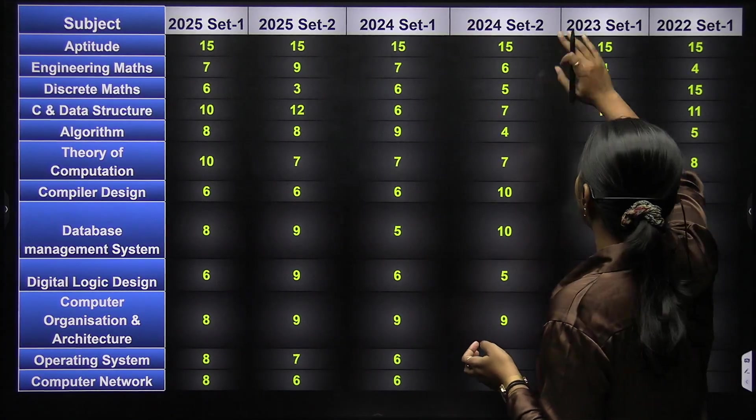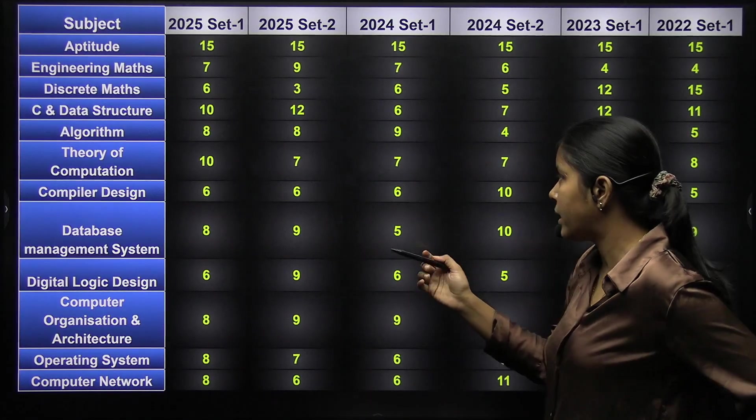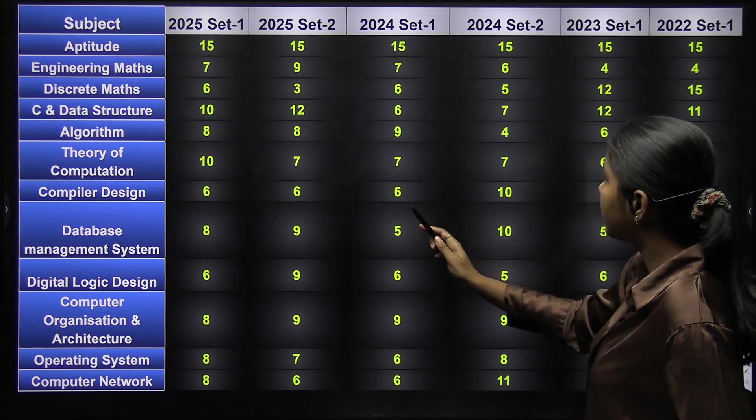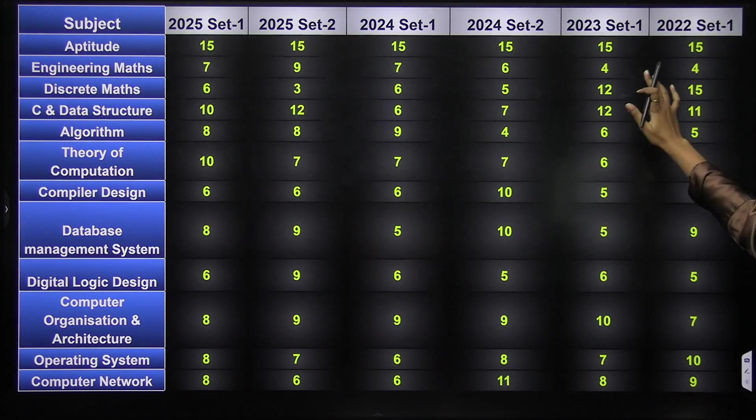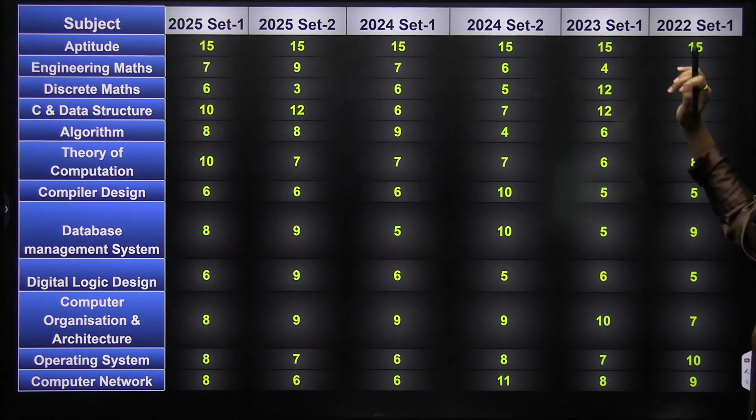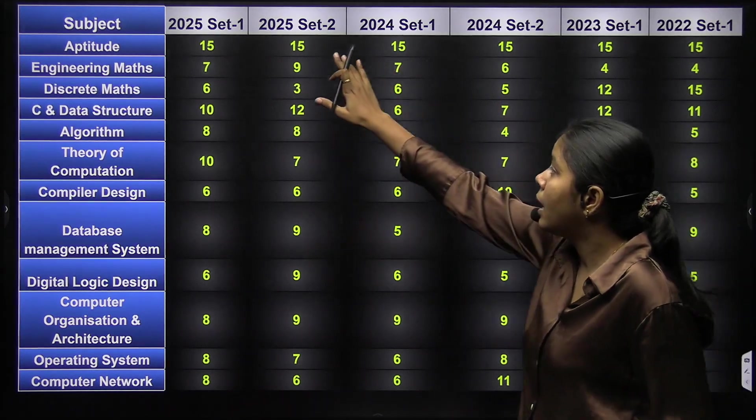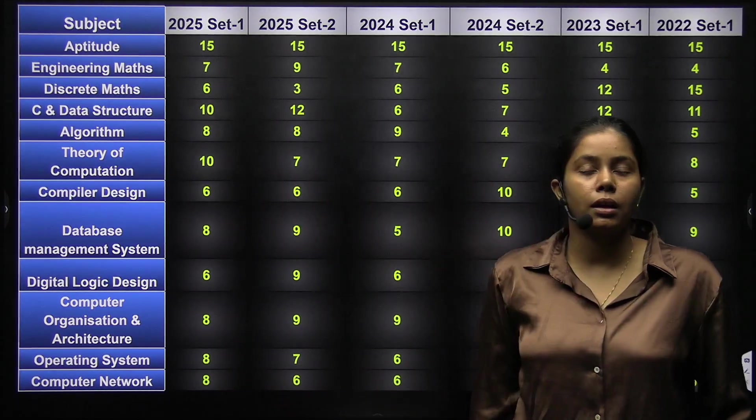But engineering mathematics, you can see that previously they have asked four marks in 2022 and 2023, then it increased to six or seven, and in 2025 they have asked around seven in one set and nine in another set.